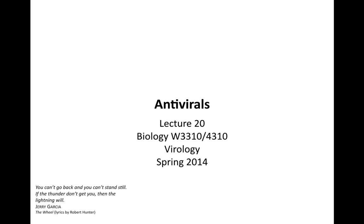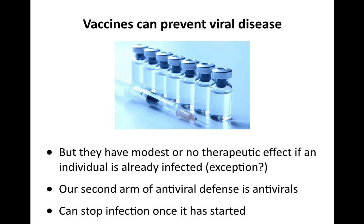This is part two of the series of lectures on how to deal with virus infections. Last time we talked about vaccines and how they prevent viral disease through the memory response they establish. Vaccines have little use if an individual is already infected. An exception is rabies, where a vaccine given after acquiring the virus by a bite can still protect. But for most other virus infections this is not possible, so we turn to antivirals, which can stop an infection once it has started.